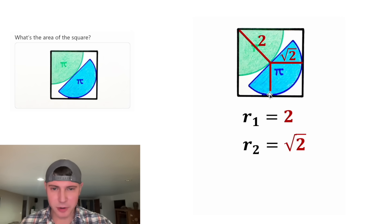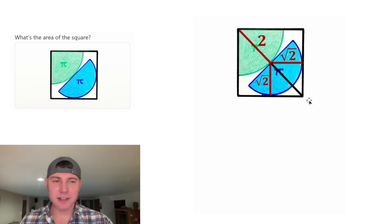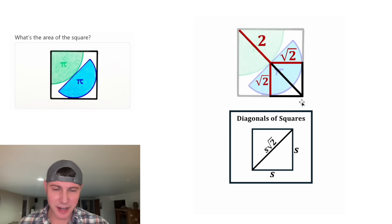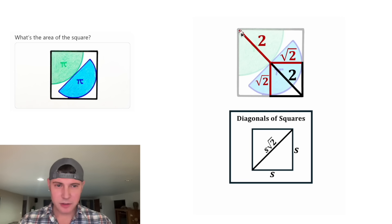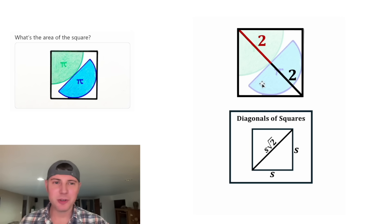Next, let's draw this other radius of the blue semicircle, which also has a length of square root of two. Now let's focus on the square down here and look at its diagonal. For every single square, the length of the diagonal is square root of two times the side length. So for this diagonal, it's going to be square root of two times square root of two, which equals two. So we know this whole diagonal is two. Looking at the larger square, the length of its diagonal is two plus two, which is four.